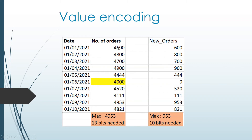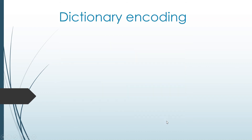By using the value encoding technique, instead of storing 4600, 4800, 4700, we store 600, 800, 700, and so on. To recover the original value, we simply add 4000 back — 600 plus 4000 gives 4600, 800 plus 4000 gives 4800. If we apply this technique to millions of rows, you can imagine how much memory we can save. The second technique is dictionary encoding.